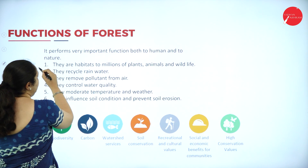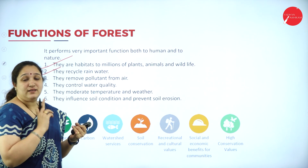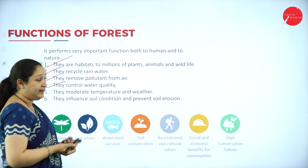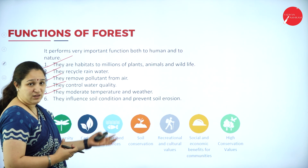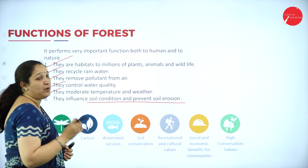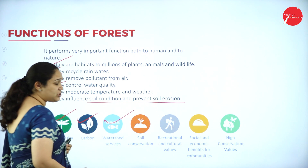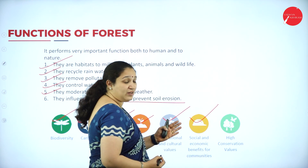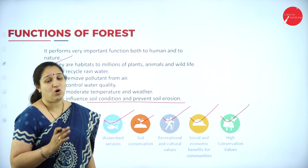The functions of forest include: they are habitat to millions of plants, animals and wildlife; they recycle rainwater; they prevent or control pollution and control water quality. They are also a main reason for climatic regulation — they can control temperature and weather. The forest has a key function of soil conservation and preventing soil erosion. They also provide biodiversity, carbon storage, watershed services, recreational and cultural values, social and economic benefits for communities, and high conservation values.